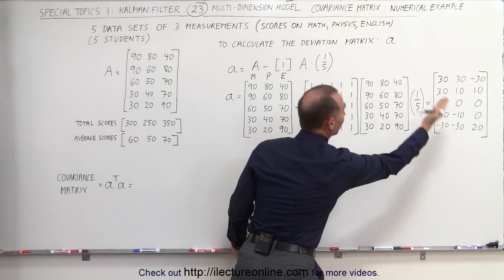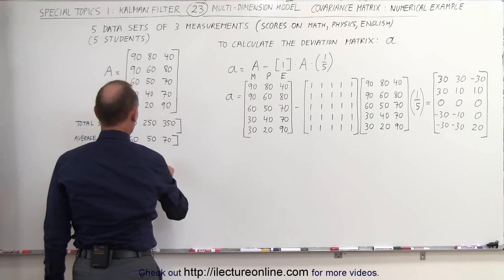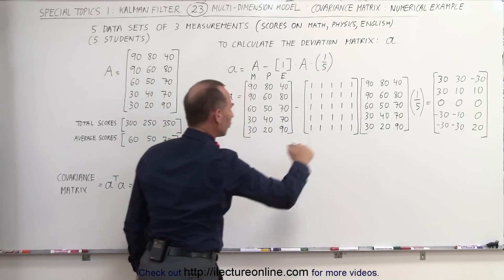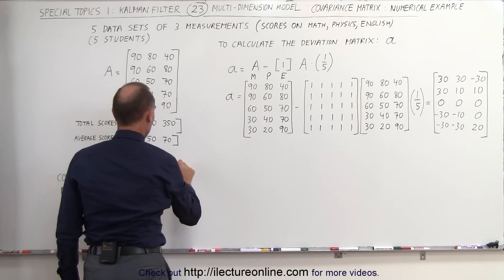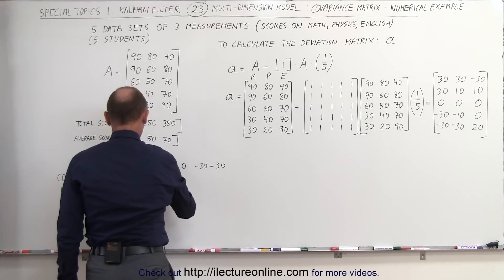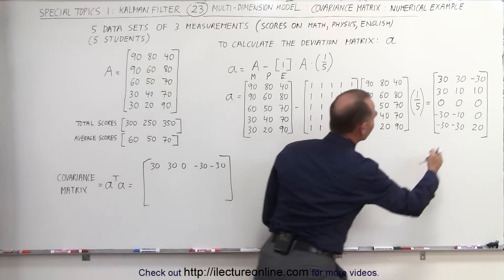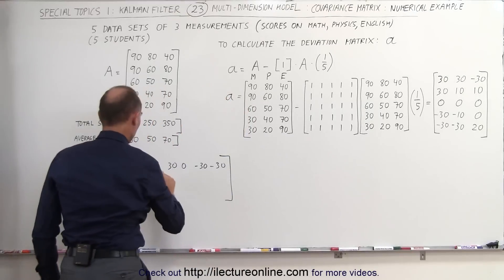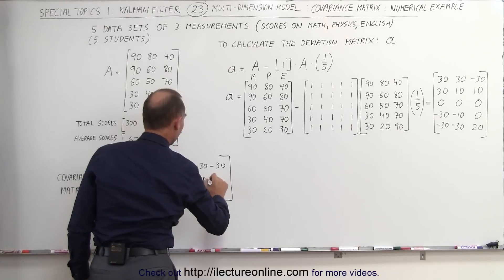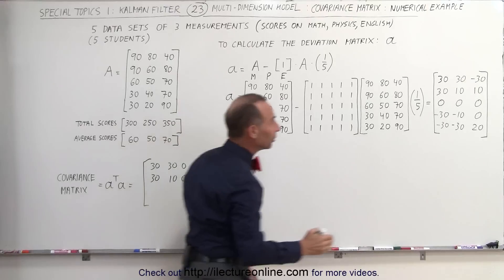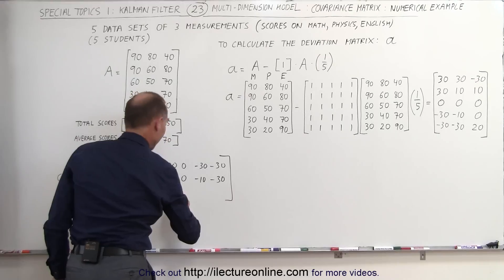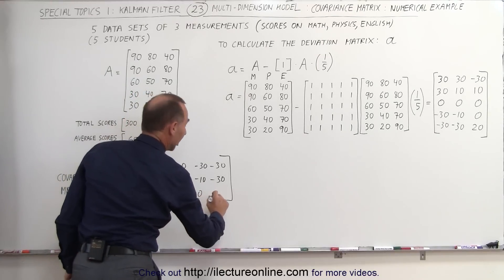We take this deviation matrix and compute its transpose. We take the first column and turn it into the first row: 30, 30, 0, minus 30, and minus 30. Then we take the second column and make it into the second row: 30, 10, 0, minus 10, and minus 30. And finally we take the third column and turn it into the third row: minus 30, 10, 0, 0, and 20.